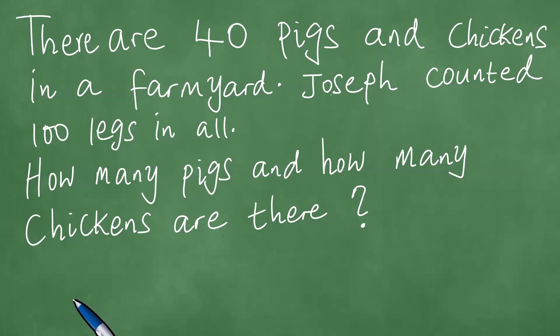In this lesson, we shall be solving this word problem in front of us. There are 40 pigs and chickens in a farmyard. Joseph counted 100 legs in all. How many pigs and how many chickens are there? And we solve this particular word problem step by step as follows.